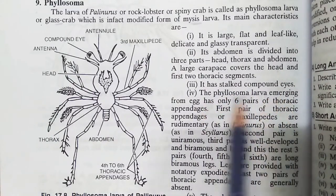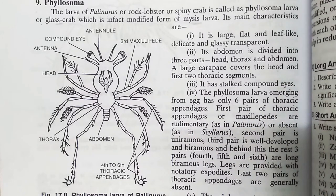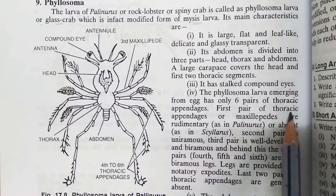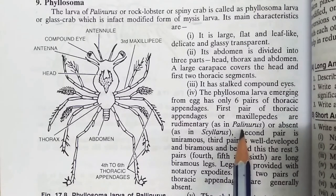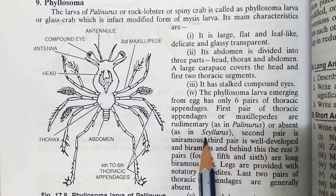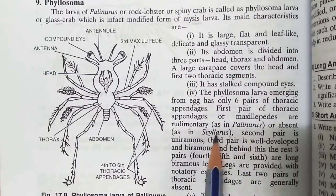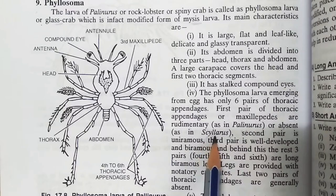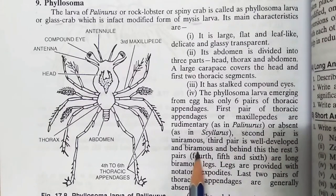The Phylosoma larva emerging from the egg has only 6 pairs of thoracic appendages. The first pair of thoracic appendages, or maxillipedes, are rudimentary in Palinurus or absent in Scyllarus. The second pair is uniramis. The third pair is well developed.